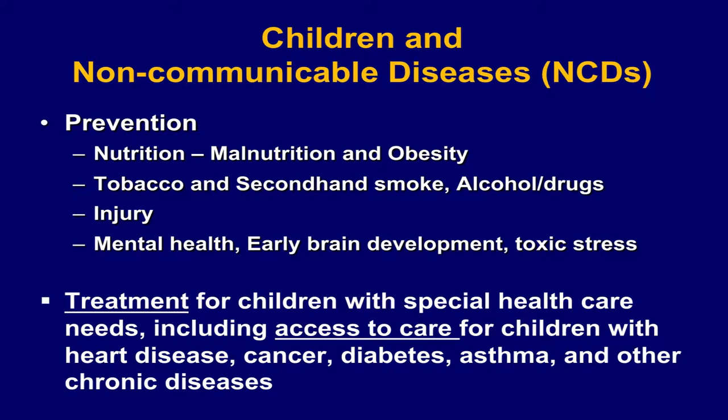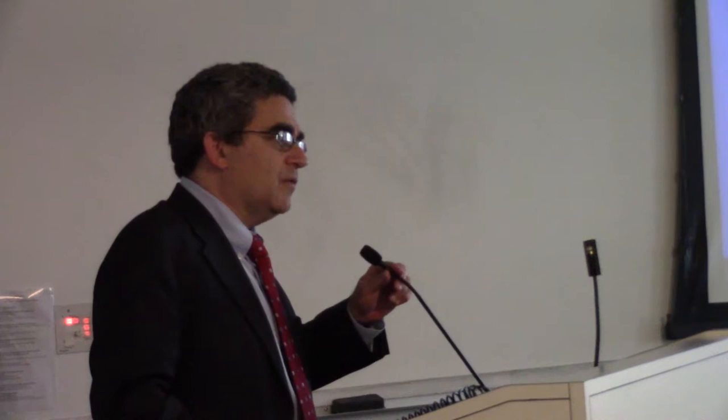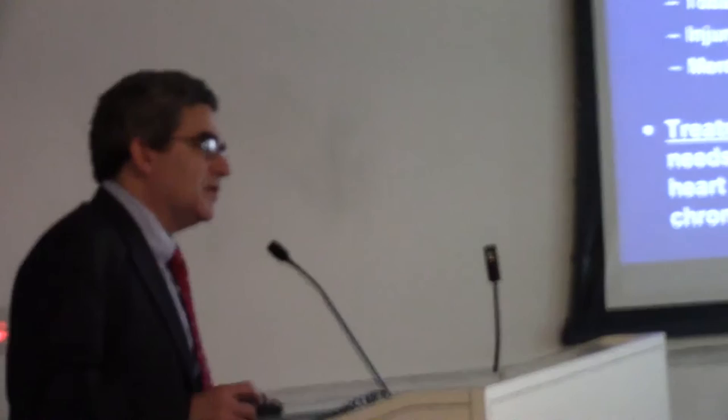When it comes to children and NCDs, the four diseases and four conditions aren't really broad enough. We've been working through NCD Child to address broadening this agenda. From the prevention side, you have nutrition issues, tobacco and secondhand smoke, alcohol and drug issues, injury, mental health, and the impact of early brain development. On the treatment side, you have treatment and access to care for children with chronic illnesses and special health care needs. It requires services by the family and in the community.